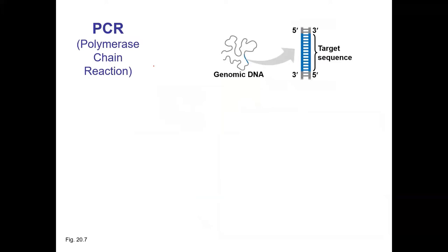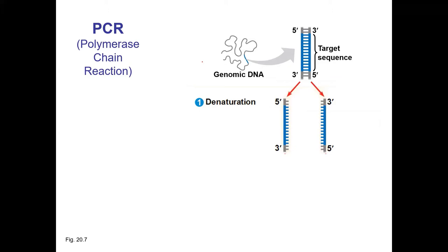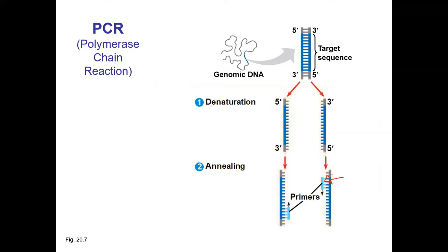For PCR you need some sort of DNA sample — from a crime scene it could be a hair; in research it could be genomic DNA from a microorganism like Pseudomonas. We separate the DNA strands using heat, usually around 96°C — no helicase, just heat. Then these primers, which are synthetic fragments made by machines, are complementary to the gene of interest you're looking for.